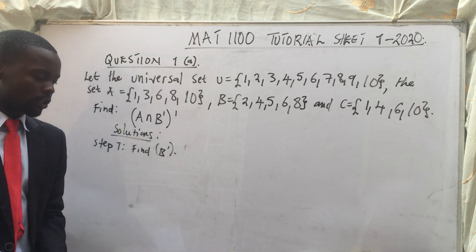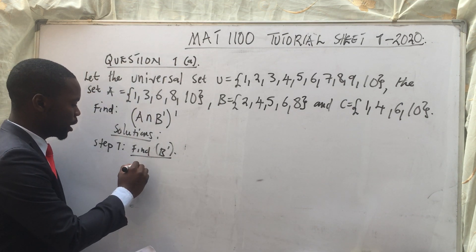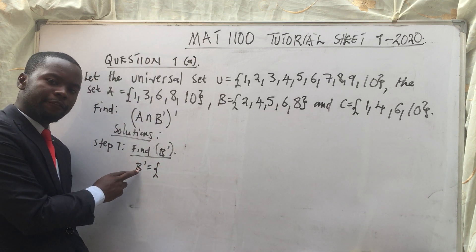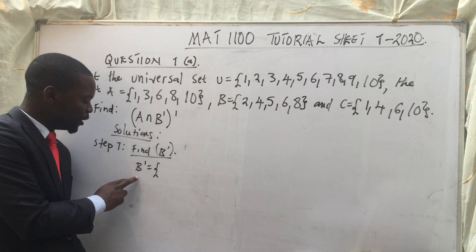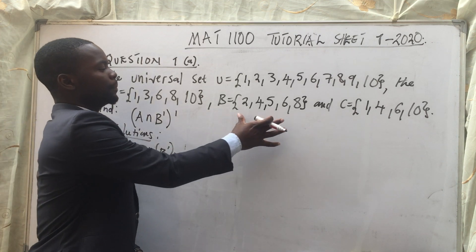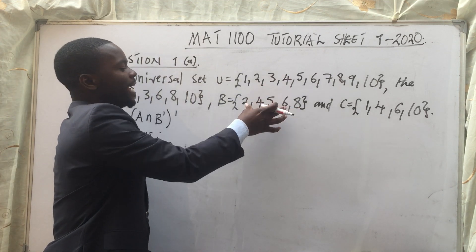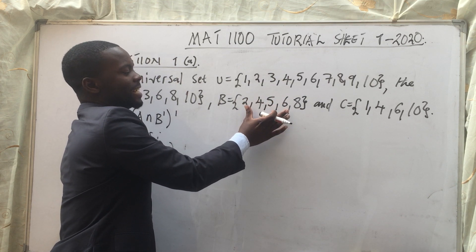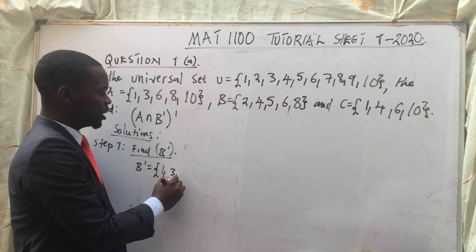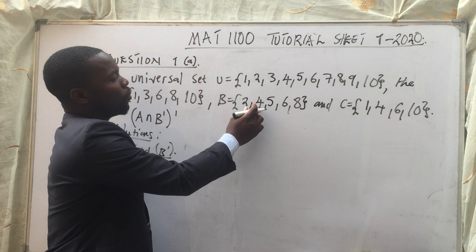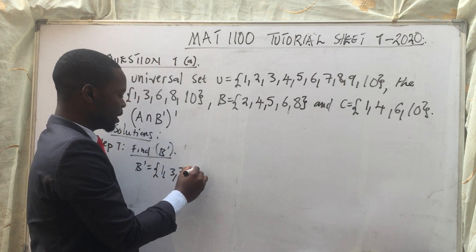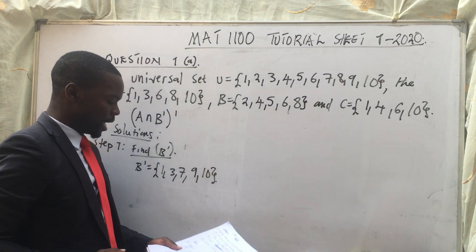Let's know what B complement is. B complement means every element which is not in B. The element which is not found in B is B complement. As you can see, 1 is not in B, 3 is not in B, 4, 5, 6 — then we have 7 is not in B, 8 is in B, and then we have 9 and 10.